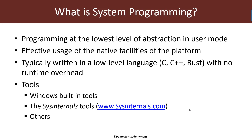System programming is about using the native facilities of the platform as best we can. We don't really want to be cross-platform or platform-agnostic — on the contrary, we want to be very specific so we can leverage what the platform allows. Such code is written in low-level languages that are close to the metal and have no runtime overhead. C, C++, and Rust are good choices for these kinds of programming.